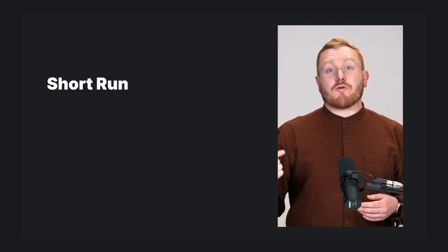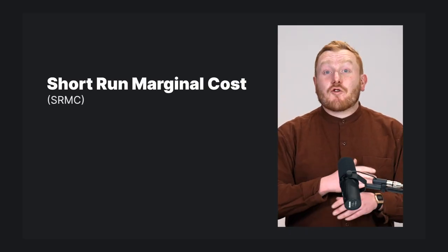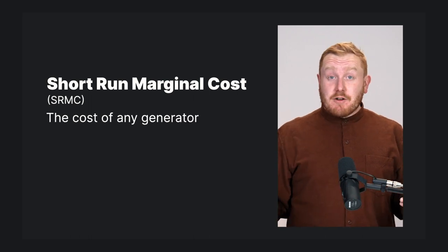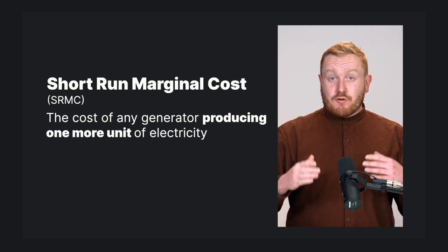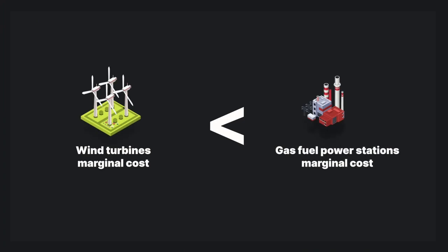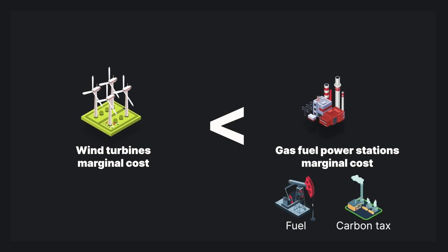Which brings me on to my next basic rule: all generators cost money to run, and that cost is called the short run marginal cost. This literally refers to the cost of any generator producing one more unit of electricity than it's currently producing. The short run marginal cost of some generators is higher than others due to things like fuel costs and carbon taxes. For example, wind turbines have a lower short run marginal cost than gas-fuelled power stations because they don't need to source external fuel and they don't have to pay any carbon tax. Therefore, we say that the short run marginal cost of wind is lower than that of gas turbines.